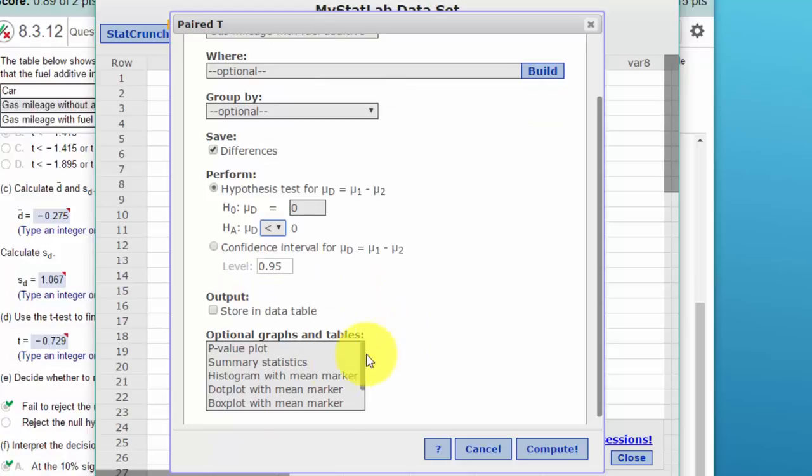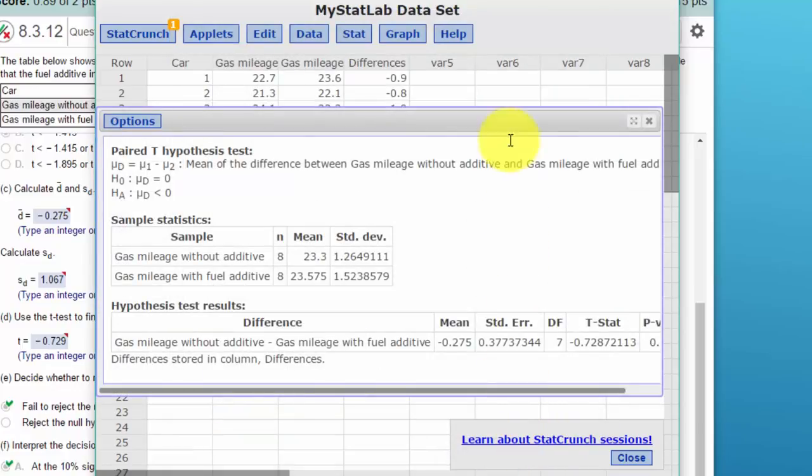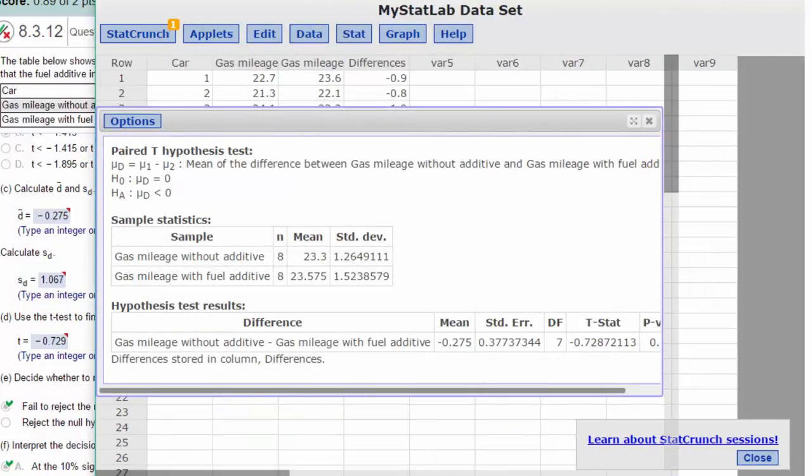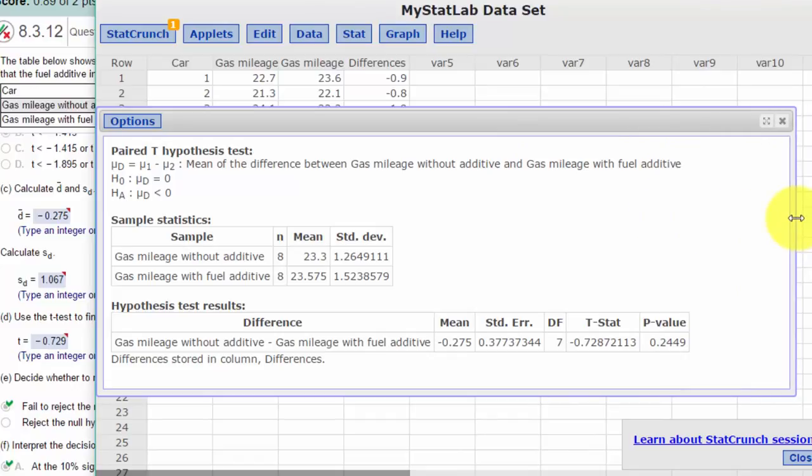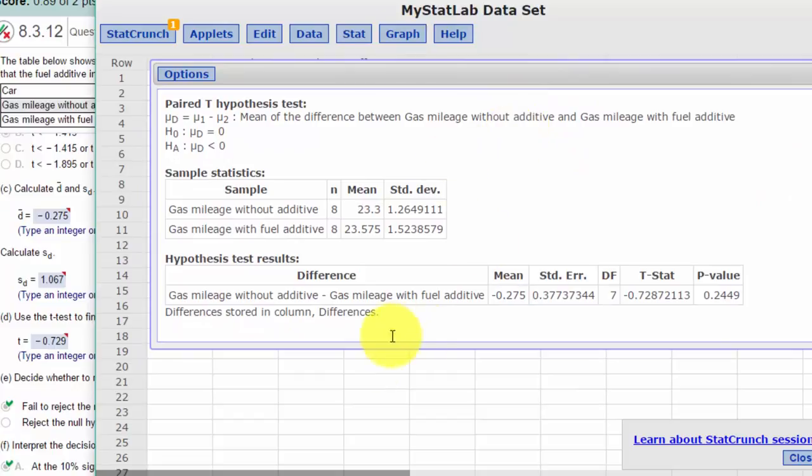Our alternative has the less than operator, and I'm going to just click on give me the summary statistics and click on compute. And here we've got our data, and we've got most of what we need. We've got our mean, and this is the mean difference D bar, minus 0.275.